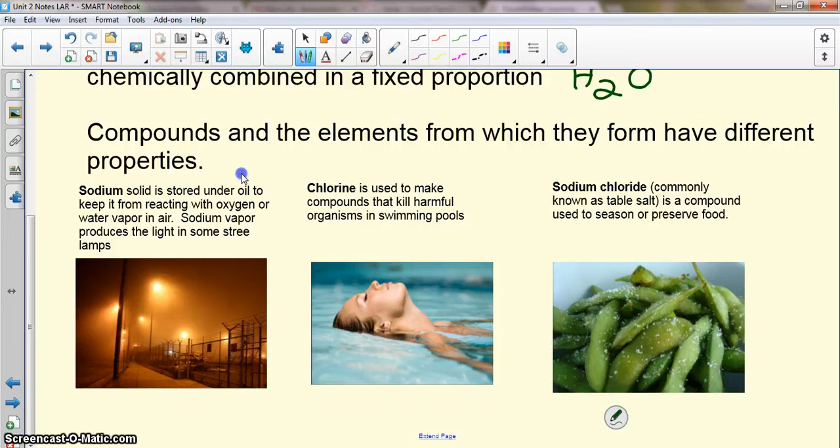When we look at the compounds that are formed and compare them to the elements that make them up, they're going to have different sets of properties. For example, sodium chloride is made from a combination or reaction between sodium and chlorine elements.